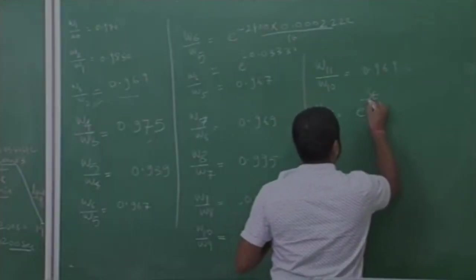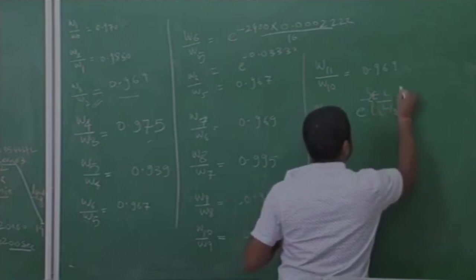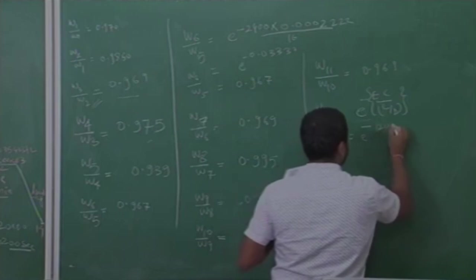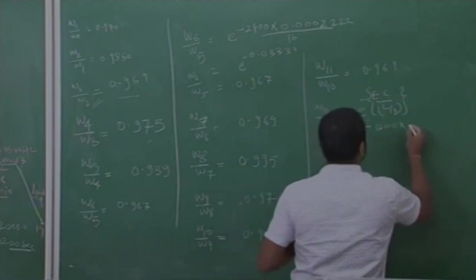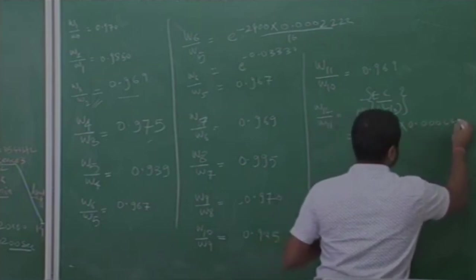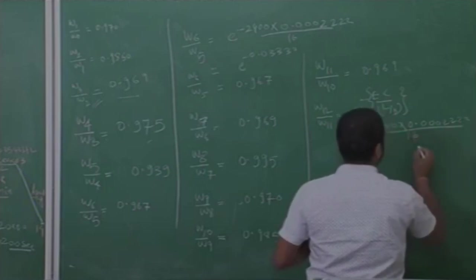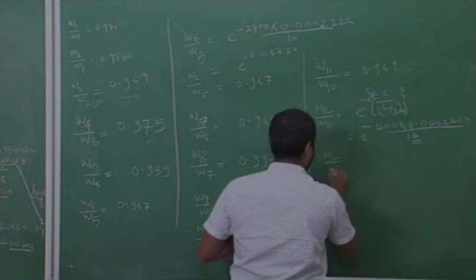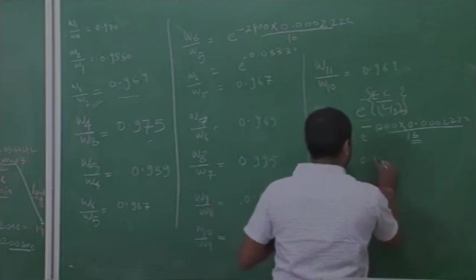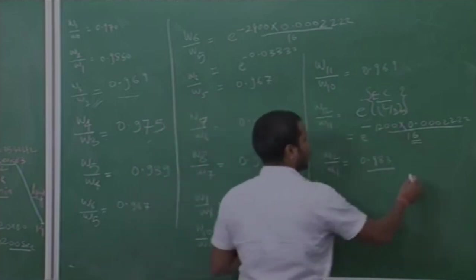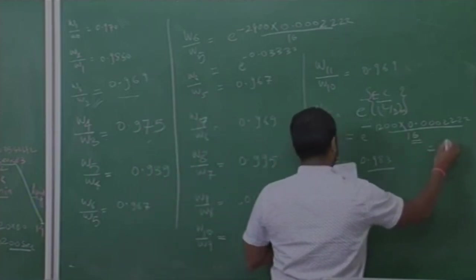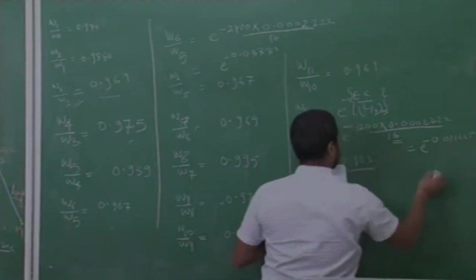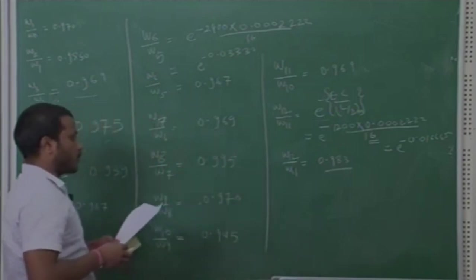For loiter, e times C divided by L by D. So e to the power, e is 1200 seconds into C for the loiter case 0.0002222. The L by D value, so this is max value, so L by D max value is 16. So W12 by W1 is 0.983, please check this value. This will be e to the power minus 0.016665, so it will be 0.983.